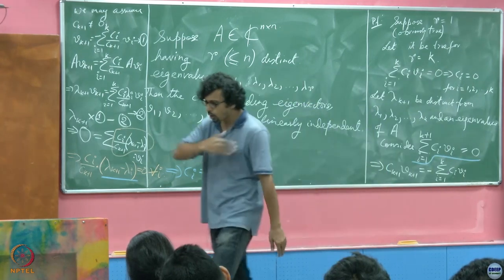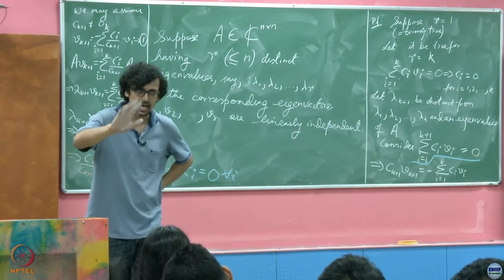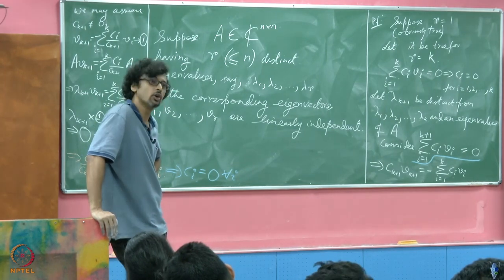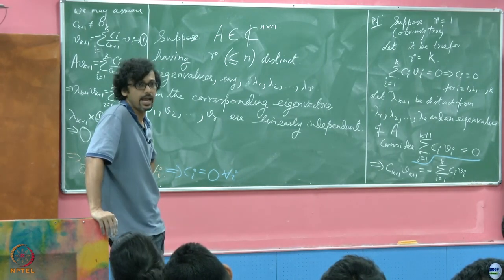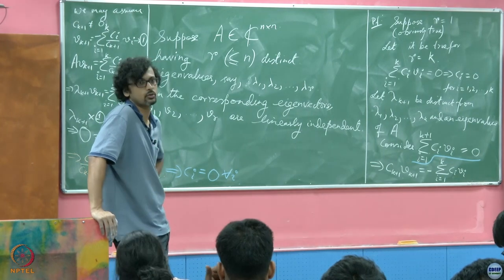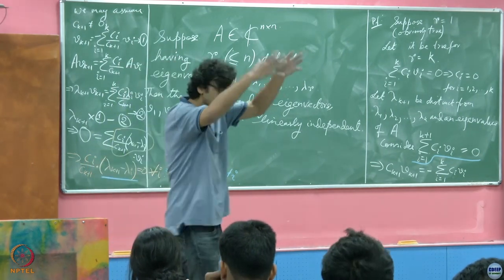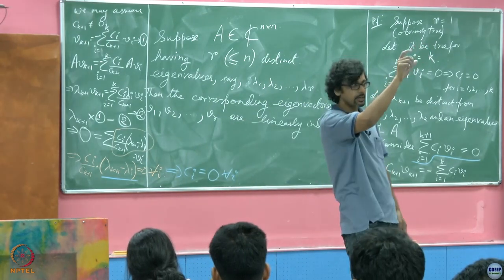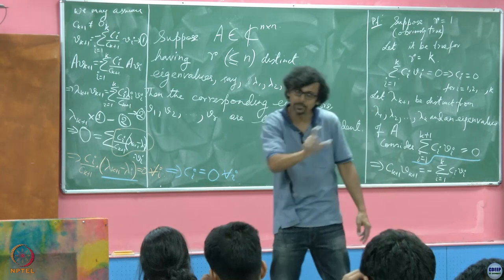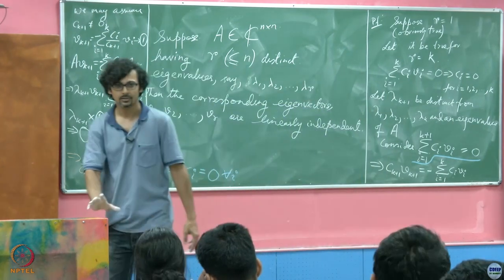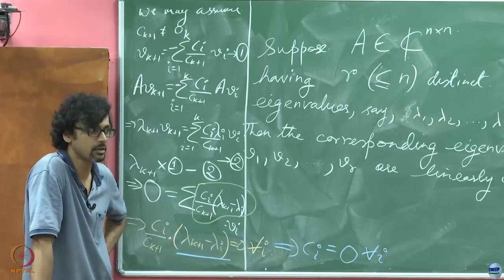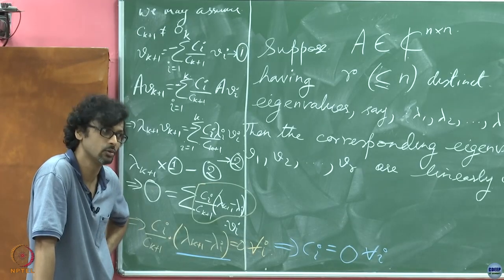Which means we have shown through mathematical induction that the eigenvectors corresponding to distinct eigenvalues must be linearly independent. And by extension, if you have all your n eigenvalues distinct for an n by n complex matrix, you are sure to find n linearly independent eigenvectors corresponding to each of these eigenvalues, and therefore be able to diagonalize this whole matrix into a diagonal matrix whose diagonal entries are all complex numbers however.